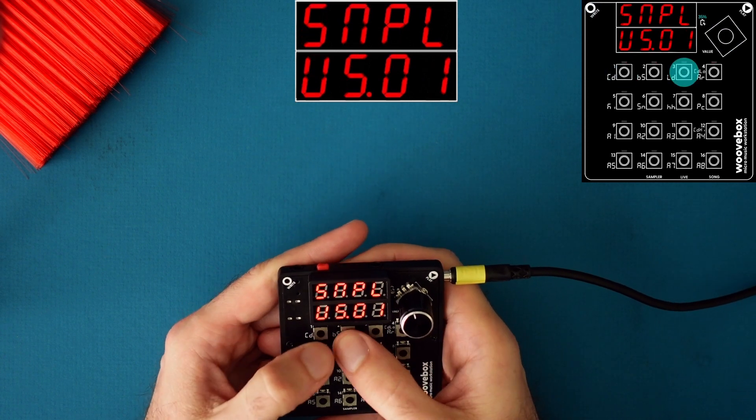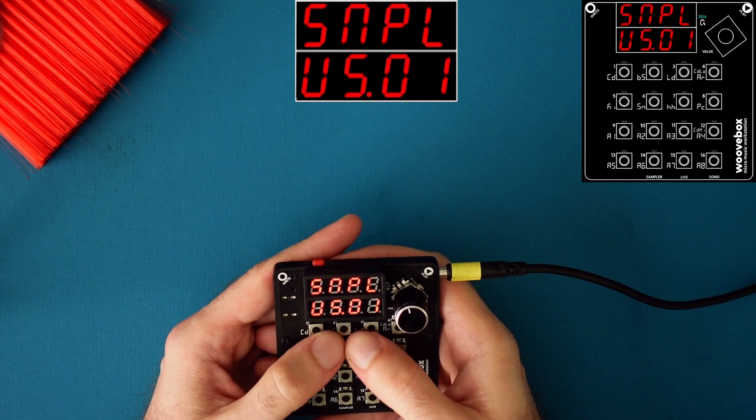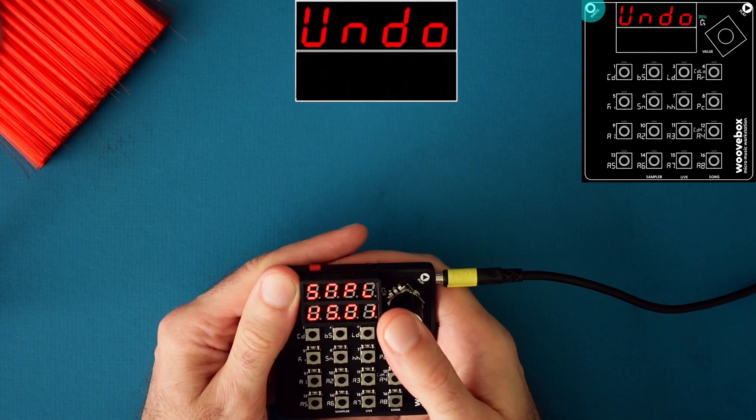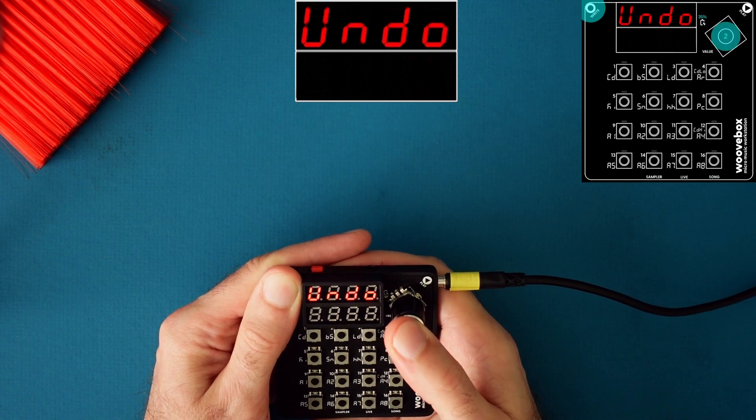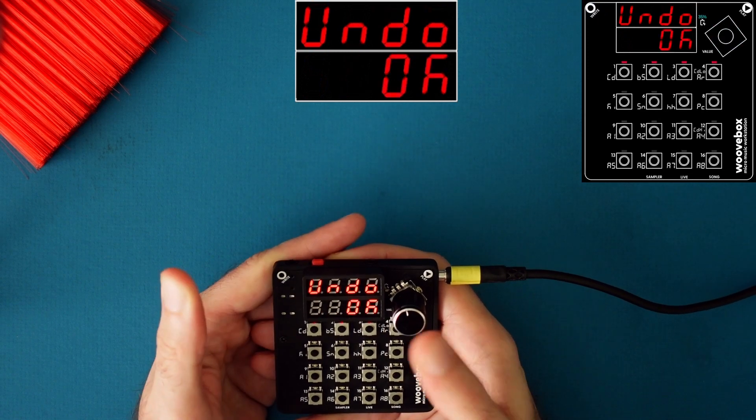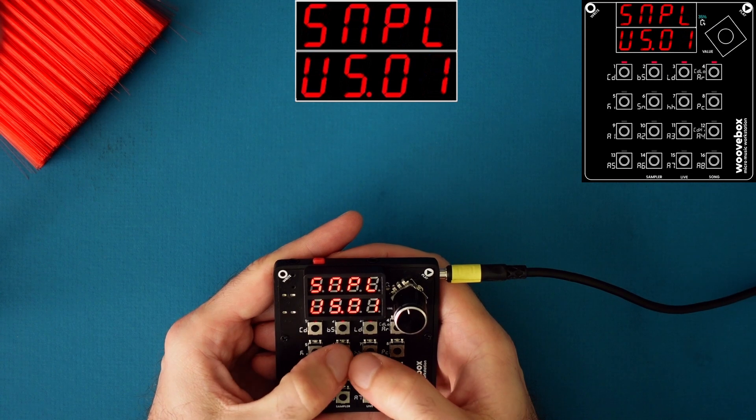Oh no. What have I done? I lost my kit. Fear not. You can go under the sampler context menu and find the undo feature and long press the encoder. And here we go. We're back.